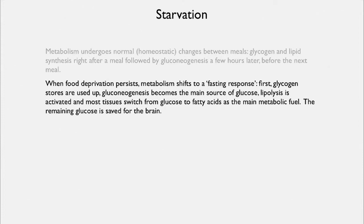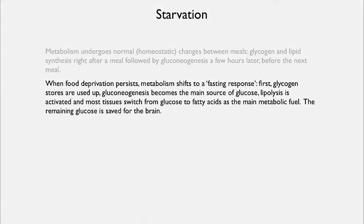When food deprivation persists — when we skip meals, when we are dieting — the metabolism shifts to a fasting response. The first thing that happens is the glycogen stores are used up. Any runner knows this in a marathon; it's called hitting the wall. All the glycogen in the liver is used up, and then gluconeogenesis becomes the main source of glucose.